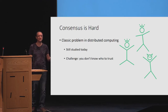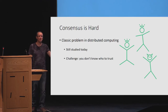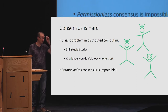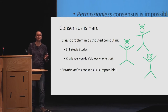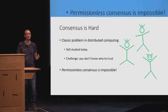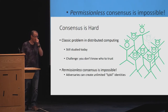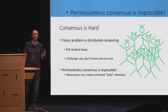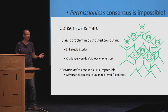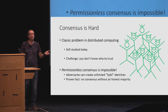The main challenge in consensus is you don't know who to trust. There are multiple parties, some of them might be malicious. In the permissionless setting, where we don't have identity verification and anybody can join the protocol, it's simply impossible to get a consensus protocol. The reason is that adversaries can just create multiple copies of themselves, so they're always in the majority. We know that we need an honest majority to get consensus.